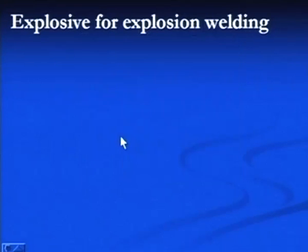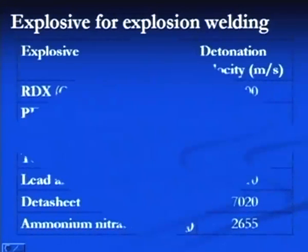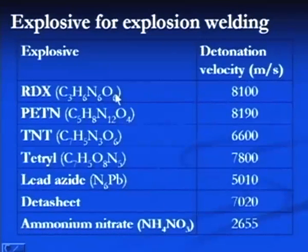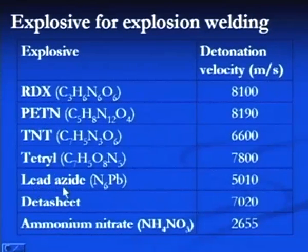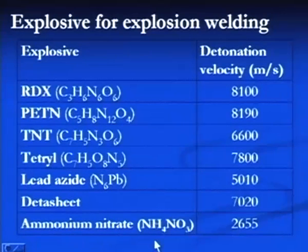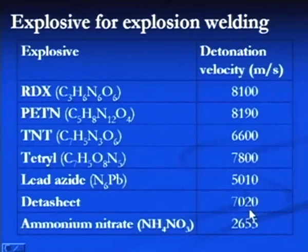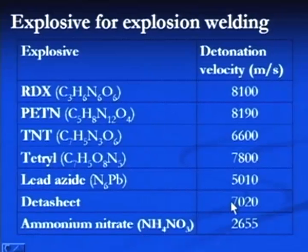Different explosive materials are used for explosion welding, such as RDX, PETN, TNT, lead azide, datasheet, and ammonium nitrate. These materials generate different detonation velocities for explosion welding.